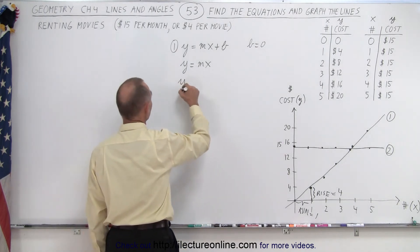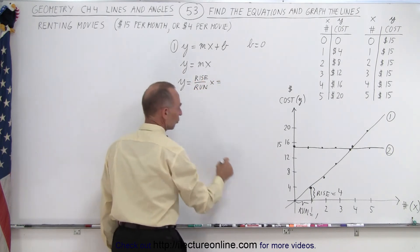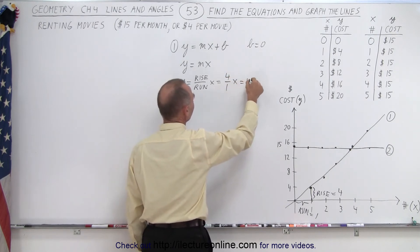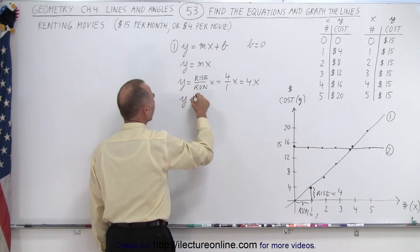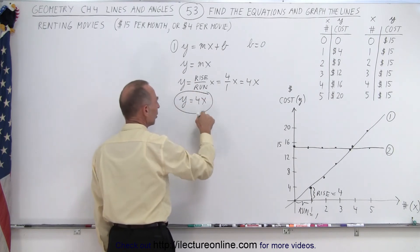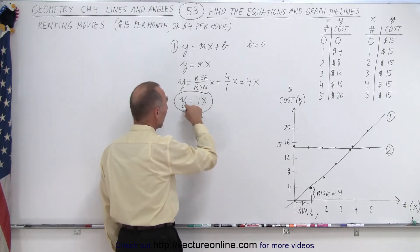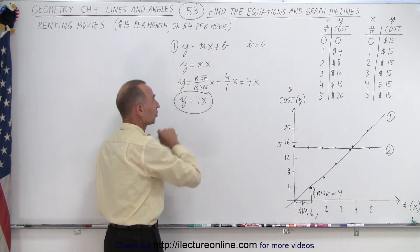So here we can say that y is equal to the slope, which is the rise over the run, times x, which is equal to rise of four, run of one times x, or simply four, 4x. Or y equals 4x is the equation of the line. You give me the quantity, x represents the quantity of movies rented, and y will give you the cost. And of course, the four represents four dollars per movie.